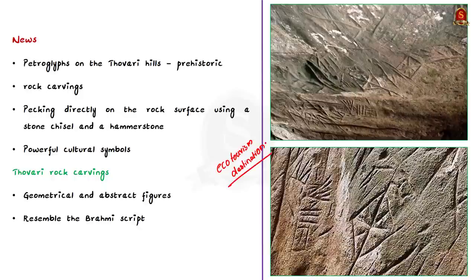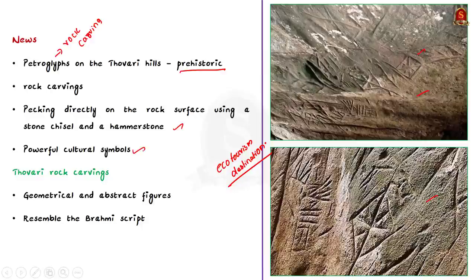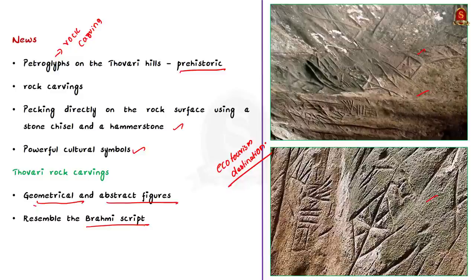According to the article, the petroglyphs on the Tovari hills are prehistoric. Petroglyphs means rock carvings, while rock paintings are called pictographs. Petroglyphs are made by picking directly on the rock surface using a stone chisel and a hammer stone. They are powerful cultural symbols reflecting the complex societies and religions of the people who lived in the area. The Tovari rock engravings are believed to comprise mainly geometrical and abstract figures; some marks closely resemble the Brahmi script, and one carving resembles a bird. Historians and researchers had acknowledged its significance.